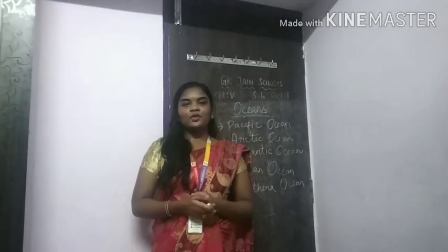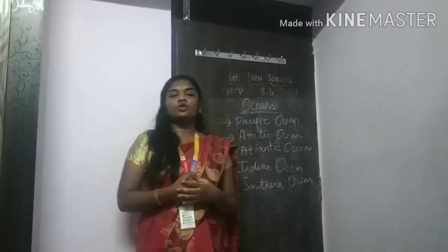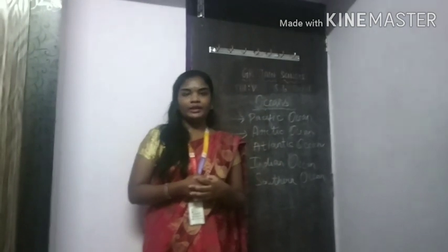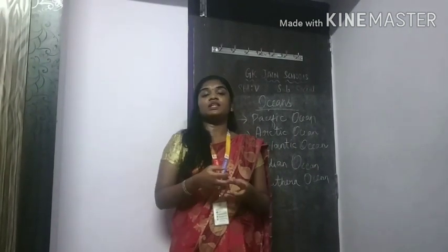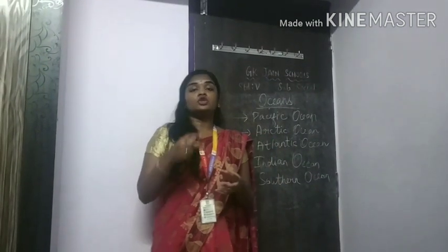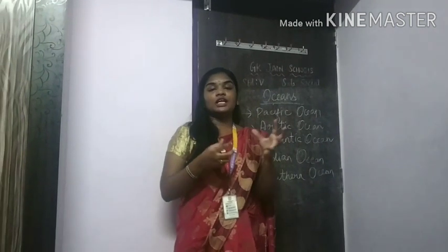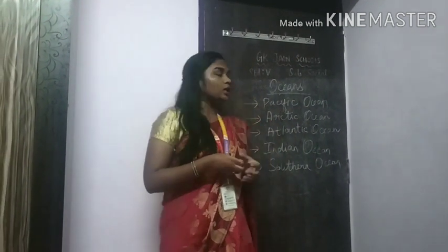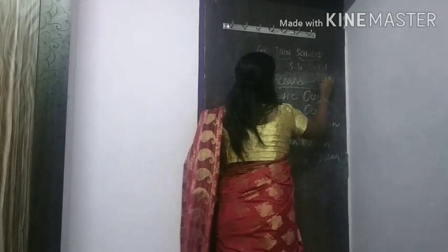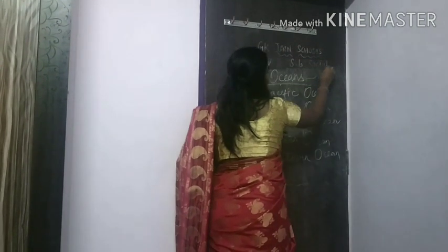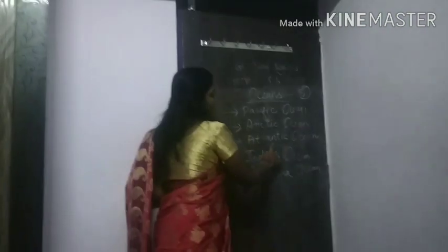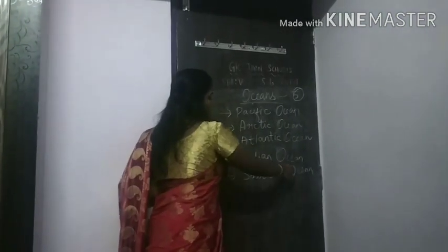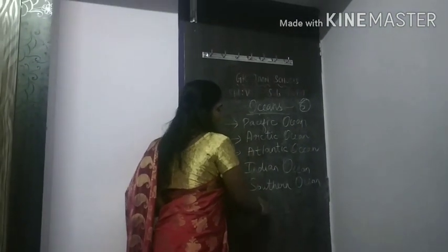Now we are going to see about the oceans. Oceans are water bodies composed of saline water, which means salt water. There are five oceans on the surface of the earth. They are the Pacific Ocean, Arctic Ocean, Atlantic Ocean, Indian Ocean, and Southern Ocean.